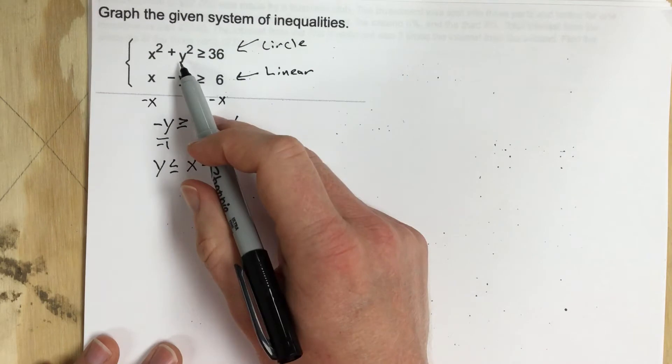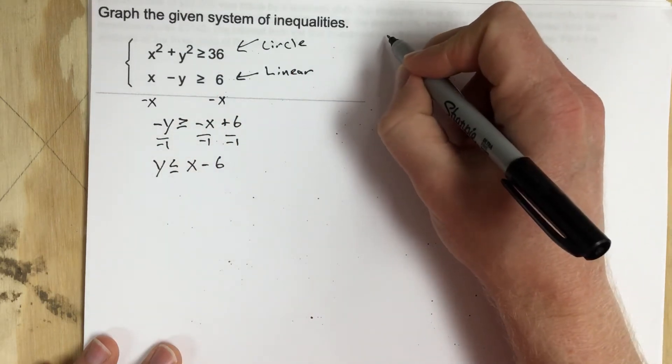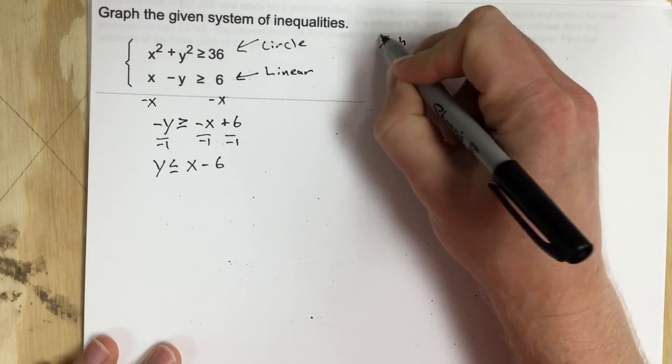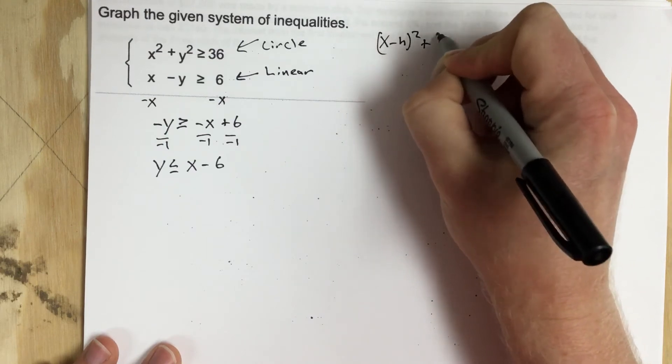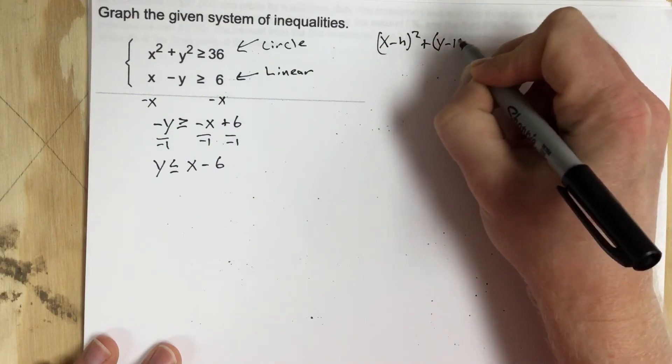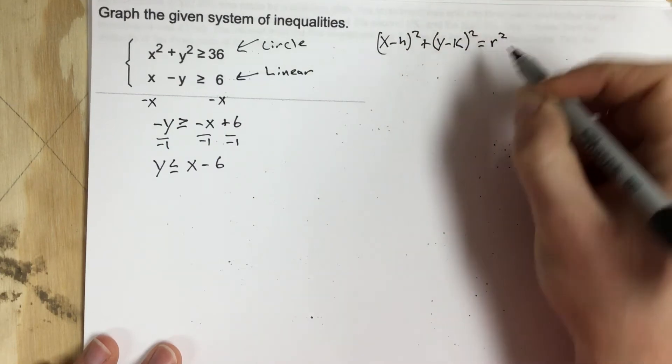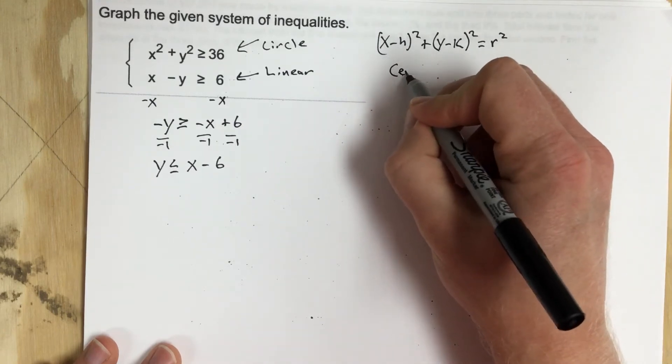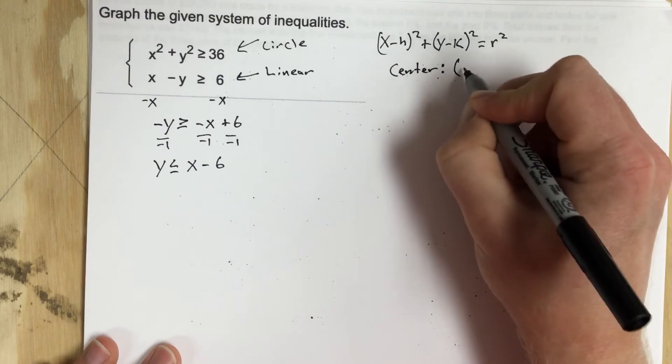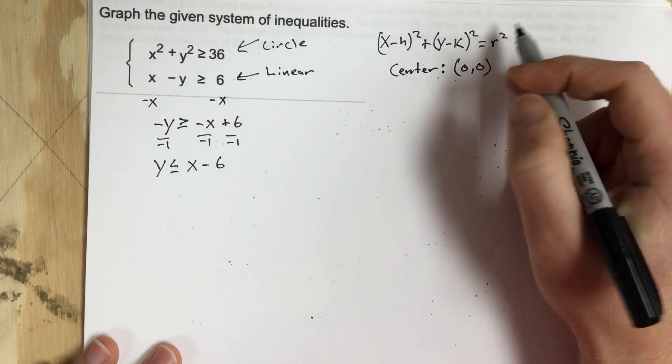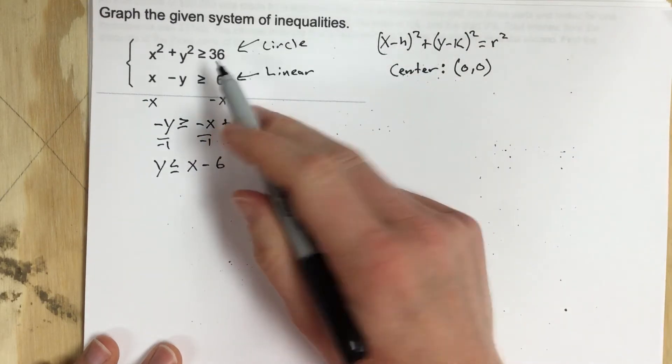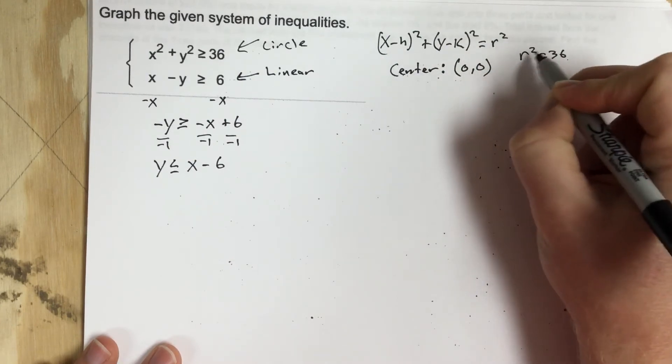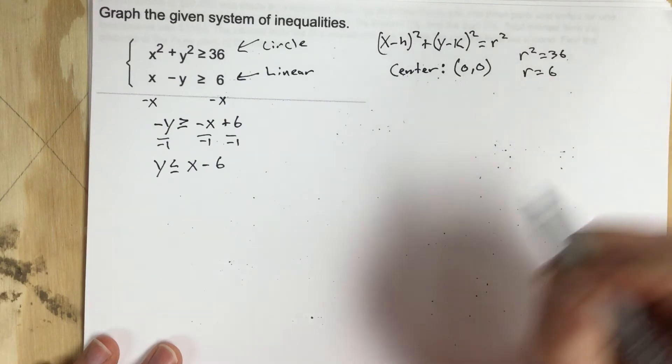The circle equation, the center for that circle, because the original equation for a circle is x minus h squared plus y minus k squared equals r squared. Well you notice that there's no h and k which means h and k in the center must be 0, 0. And then r squared is 36 so that means r squared equals 36. When we square root it we get r equals 6. The radius of the circle is 6.